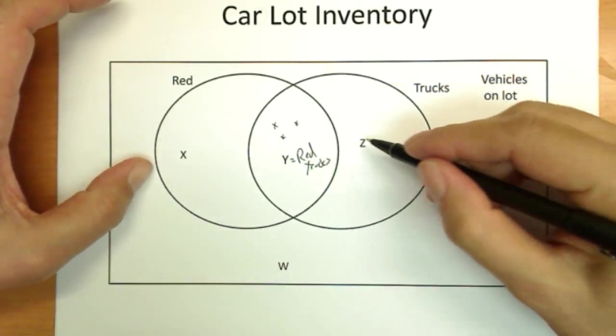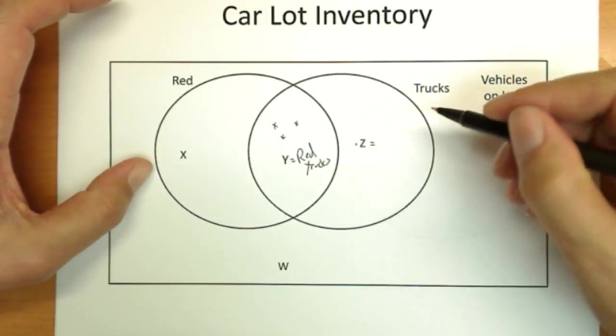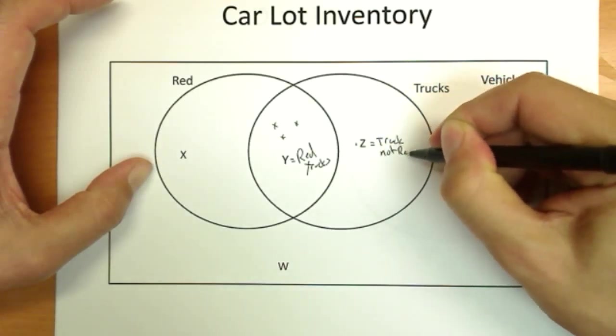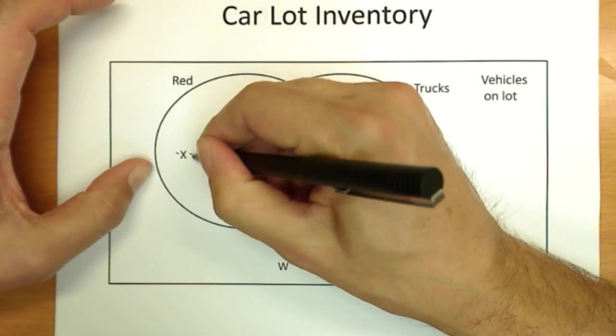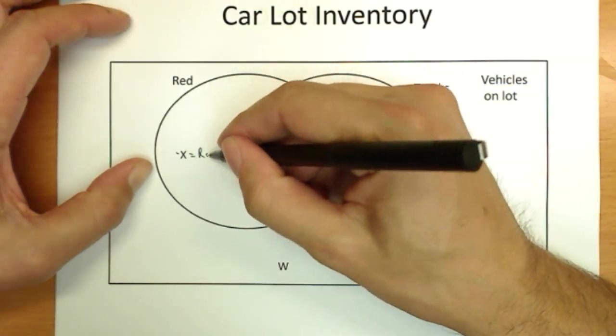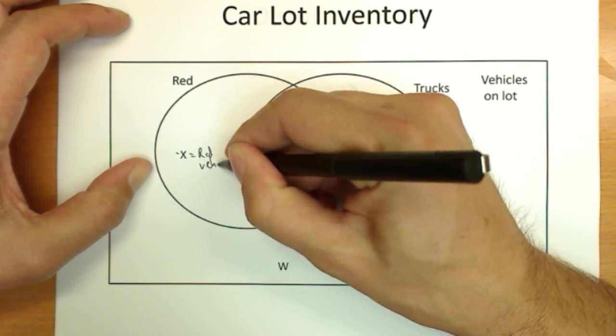Anything over here, an item Z, for example, if Z was a particular item, is a truck that is not red. And item X over here, what would its properties be? Well, it's not a truck, and it is red. So it's a red vehicle. It's not a truck.